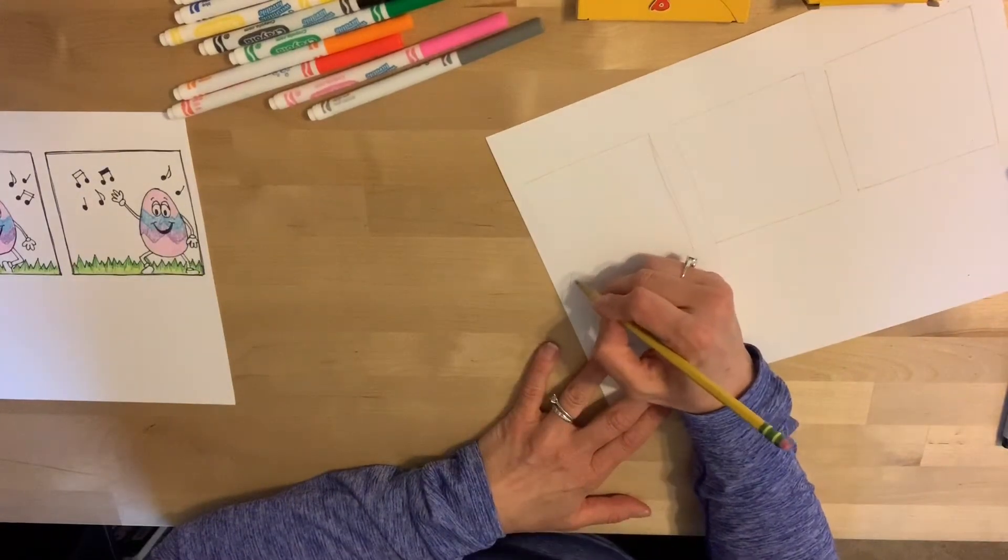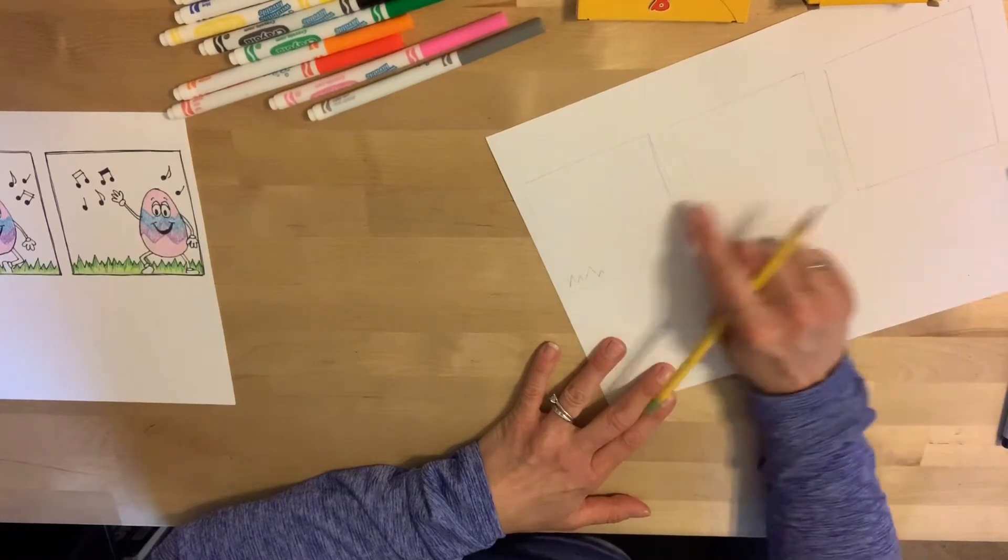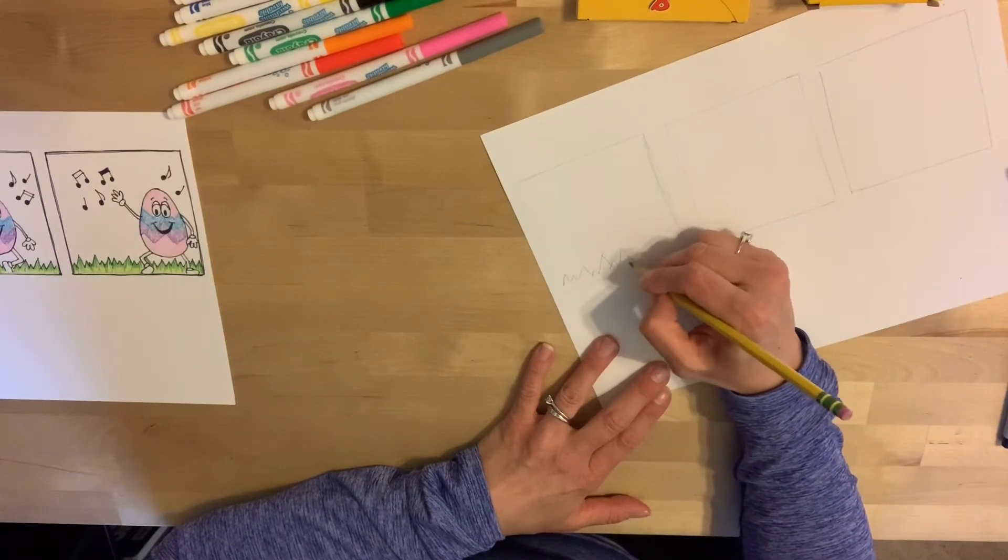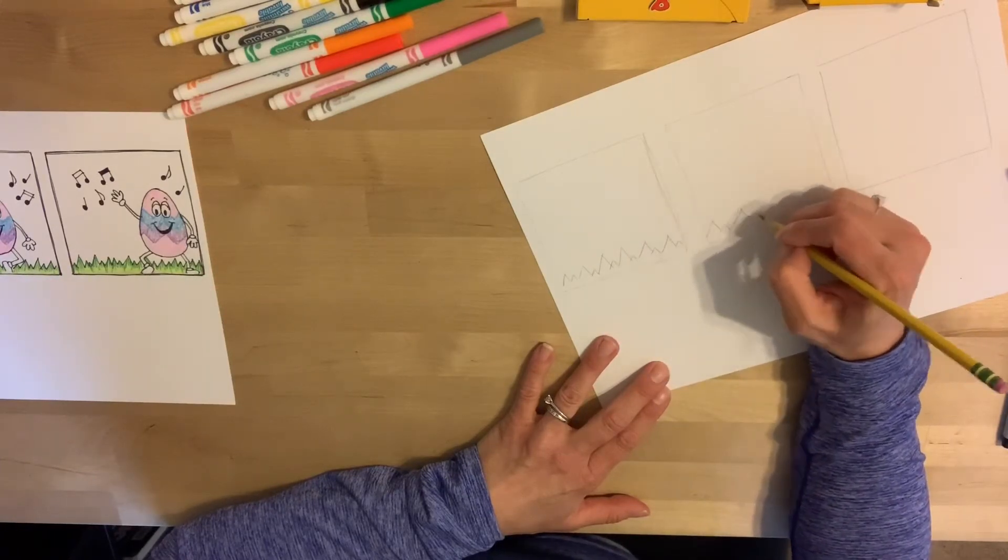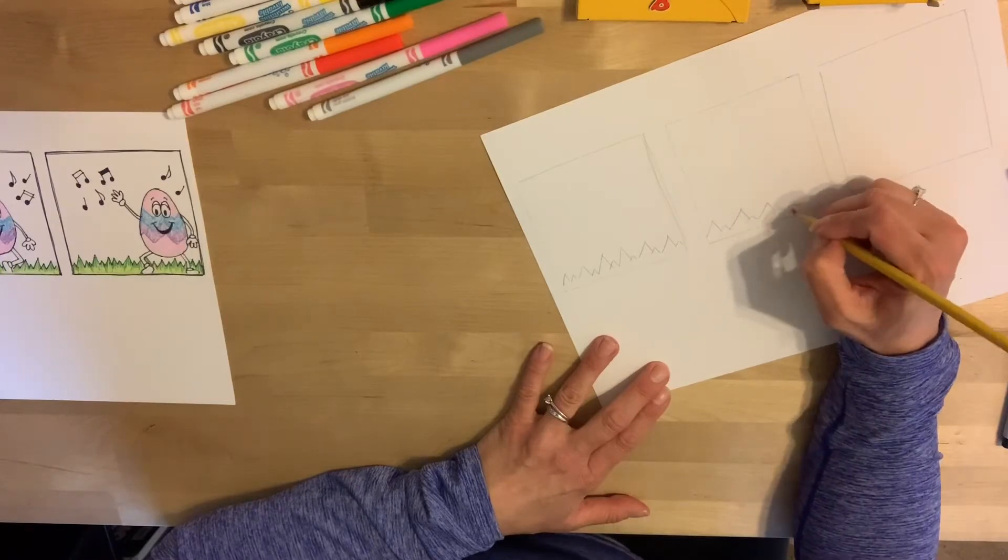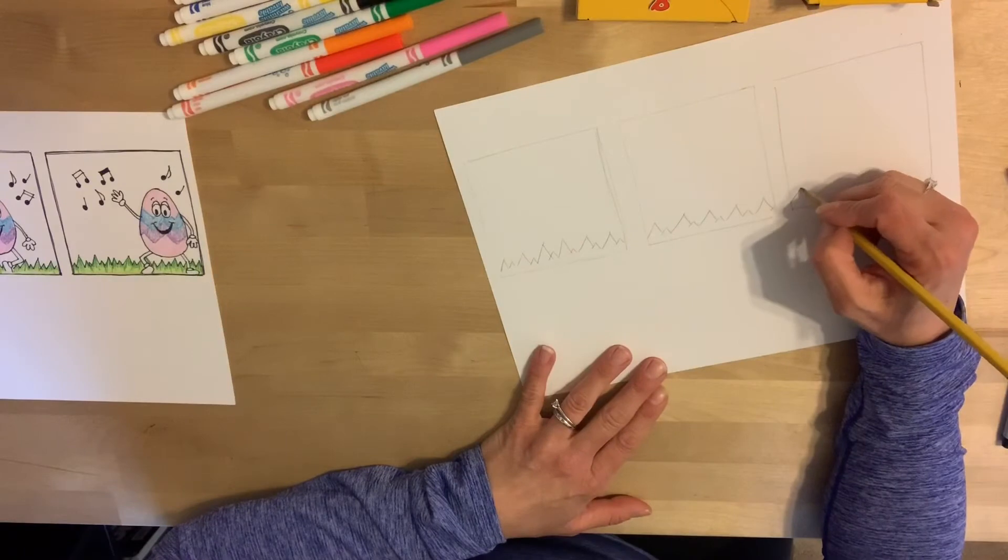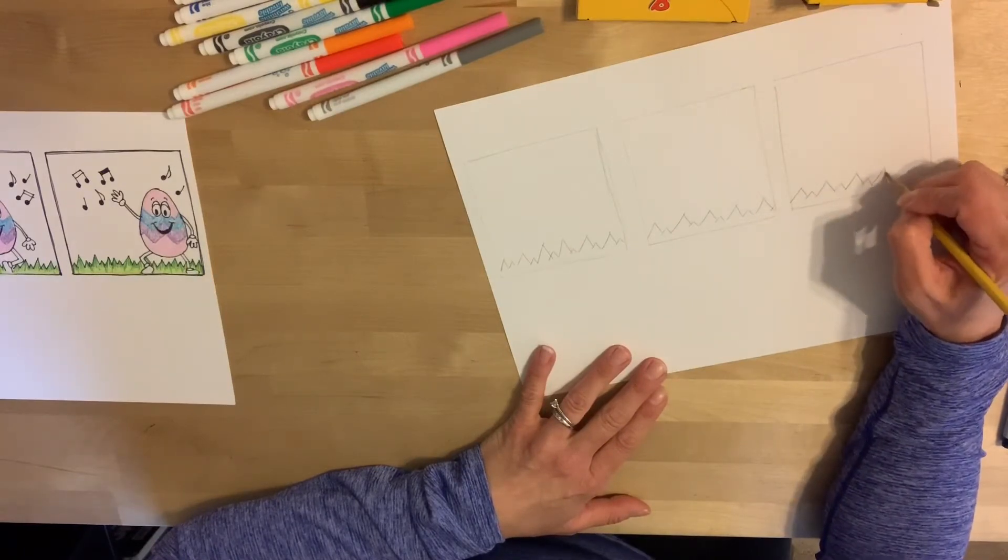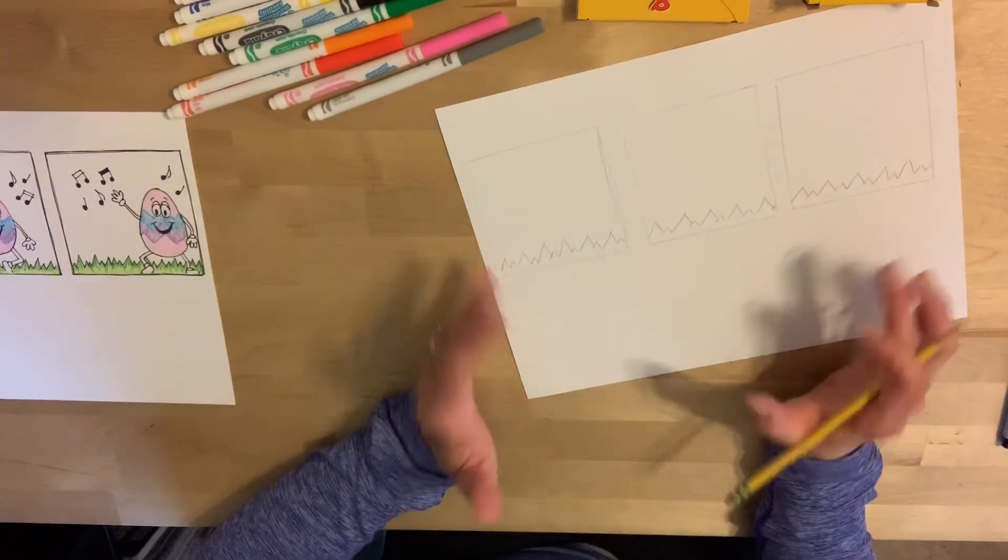Now the trick is, you want each frame, these are called frames, each block is called a frame. You want each block or each frame to be pretty much the same, so that we can tell this is all one scene.